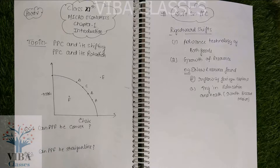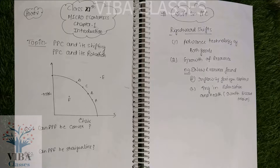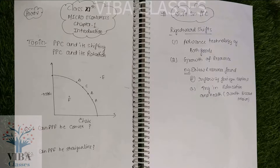The most important thing is to understand and then to practice. My advice is that you attempt those questions and we will tell you which answers are correct and which are wrong. So, you have the last concept in this chapter — when the production possibility curve is shifting and when it is rotating.